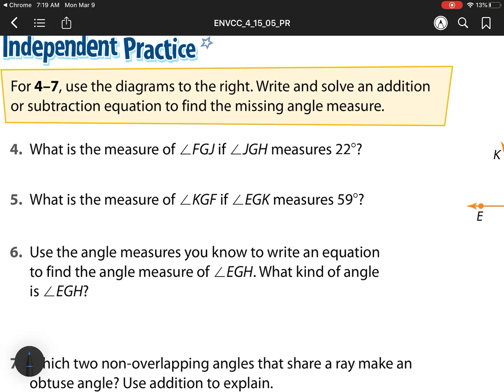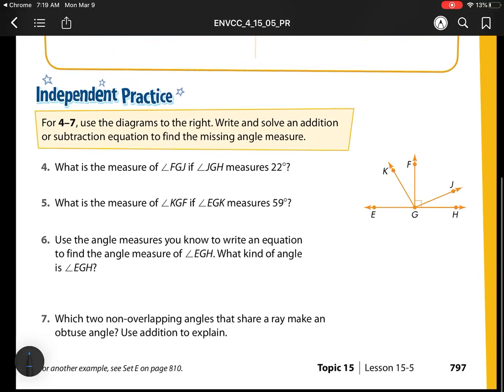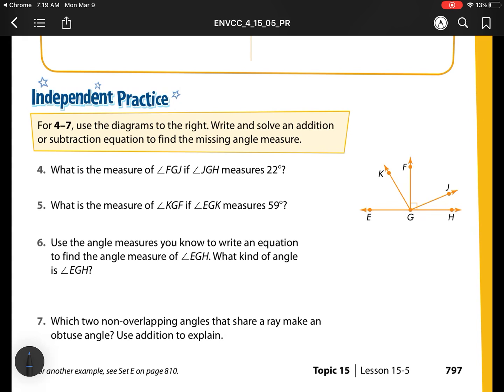So for number 4 through 7, use the diagrams to the right. Write and solve an addition or subtraction equation. Remember, equation means it needs to have that equal sign to find the missing angle measures. Some things we need to remember before we begin is 180 degrees equals a straight line and 90 degrees equals a right angle. So either one of those are going to be my two key things I need to use.